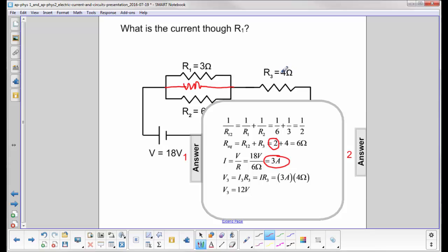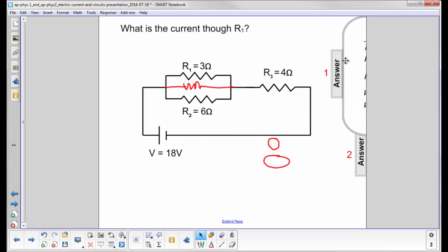We look at the voltage drop over here. The same current that comes out of the battery goes through this resistance R3. So the voltage drop across R3 is going to be 3 amps times 4 ohms or 12 volts. So we'll push this back up here.